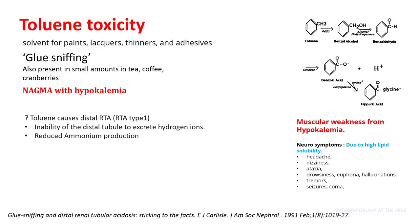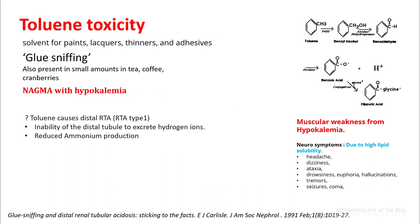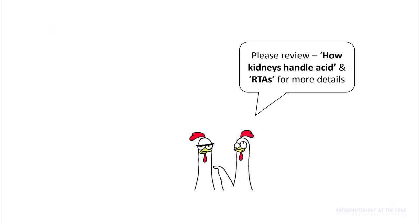Toluene toxicity is seen in glue sniffing. It is present in solvents like paint, lacquers, thinners, and adhesives. It presents with non-anion gap acidosis with hypokalemia and causes severe muscle weakness. It also causes a lot of neurological symptoms due to its high lipid solubility. Toluene causes distal RTA type 1, in which there is inability to excrete hydrogen ions and there is reduced ammonia production.